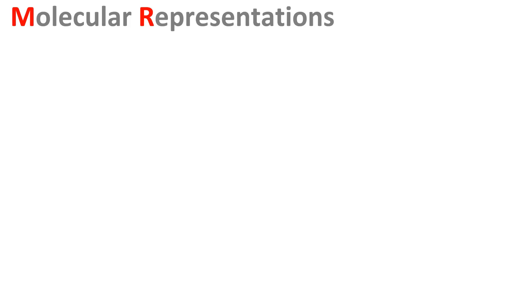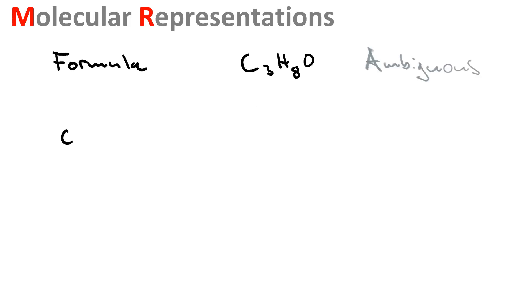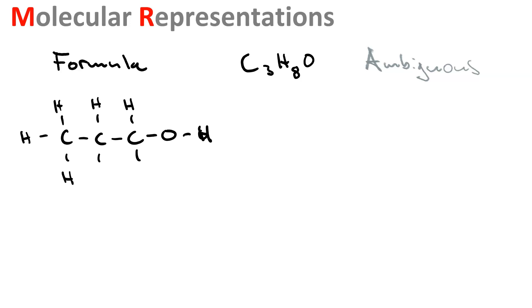Molecular representations. We've already seen that chemical formulas by themselves can be ambiguous. For instance, if we have a molecule whose chemical formula is C3H8O, there are actually three ways we can draw it. We could go C-C-C-O for our backbone, which would give us a Lewis structure. This is 1-propanol.